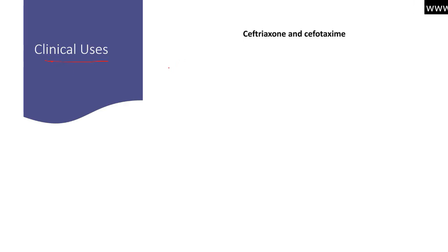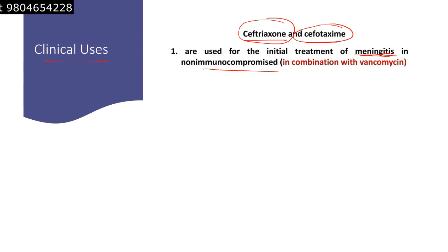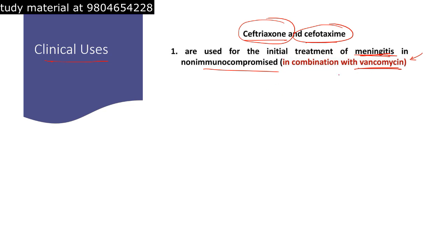For clinical uses: ceftriaxone and cefotaxime, both third-generation cephalosporins, have similar clinical applications. They are used for initial treatment of meningitis in non-immunocompromised patients. For immunocompromised patients, cephalosporins are not used — instead, treatment starts with vancomycin, which is another beta-lactam antibiotic that prevents peptidoglycan cross-linking.